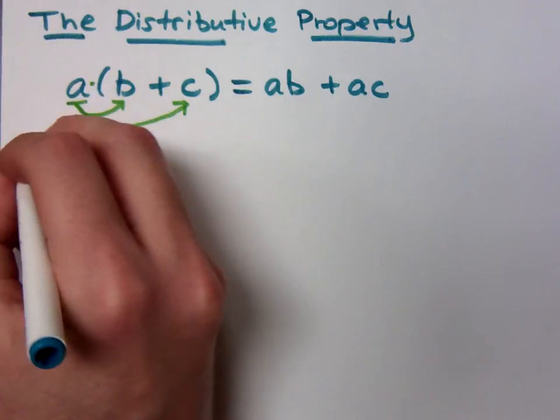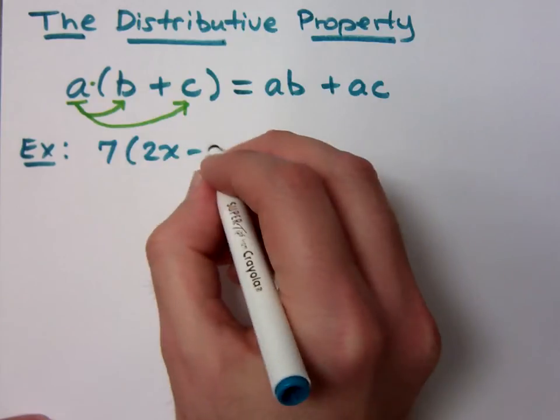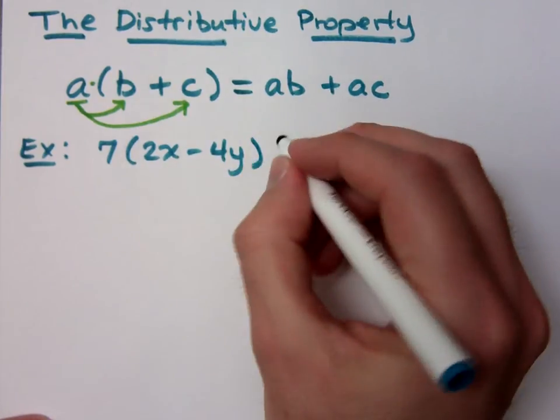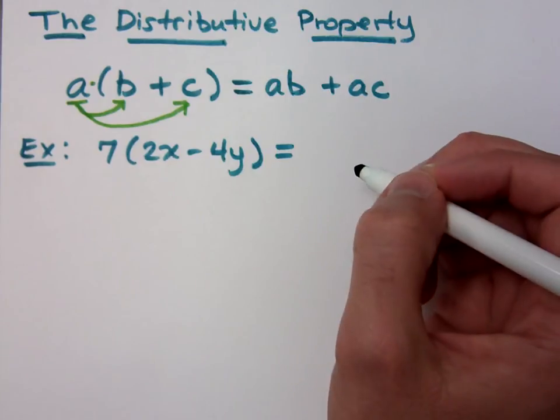And we can use this and just do problems. If I have 7 times 2x minus 4y, what's going to happen here if I distribute?